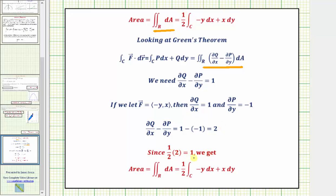This is where the factor of one half comes into play in the formula, because one half times two equals one. This gives us the formula: the area equals one half times the line integral of negative y dx plus x dy. Using this vector field, the difference of the partial derivatives gives two, and we need one, hence the factor of one half.